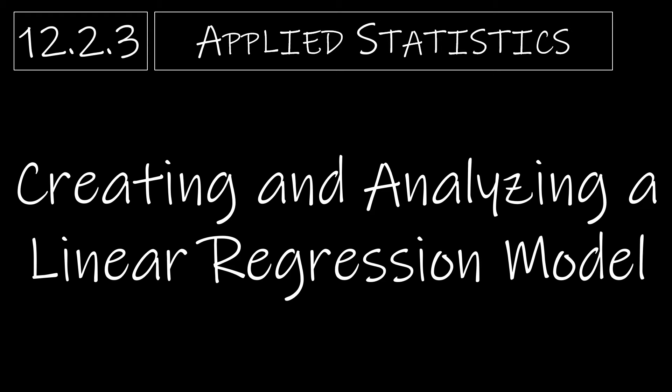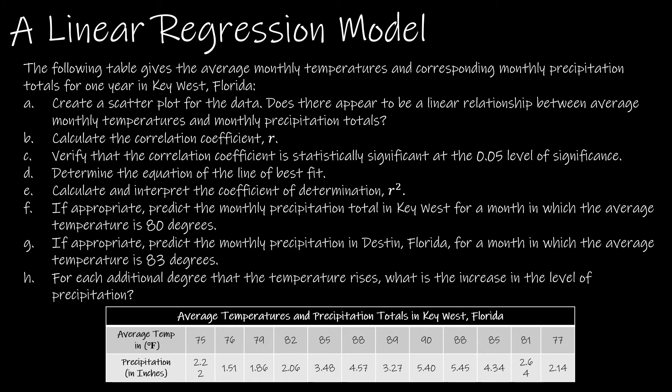This is the last video for section 12.2, and it is essentially a video that's going to review everything we've learned in section 12.1 and 12.2. So we're going to create and analyze a linear regression model. We have a table that gives the average monthly temperatures and corresponding monthly precipitation totals for one year in Key West, Florida.